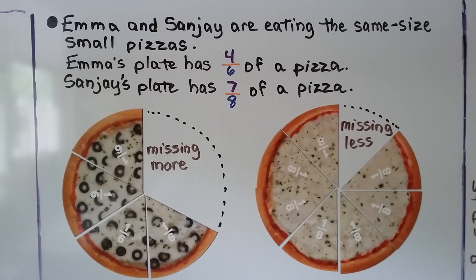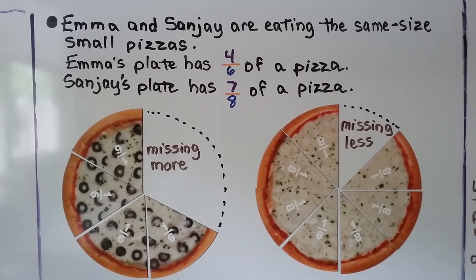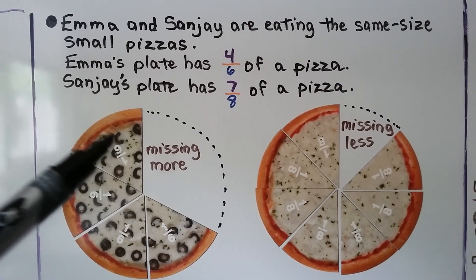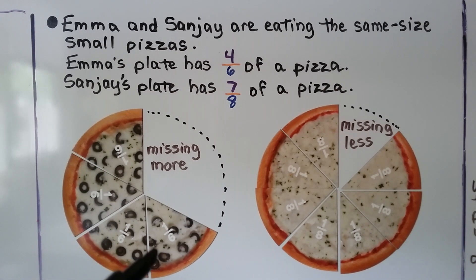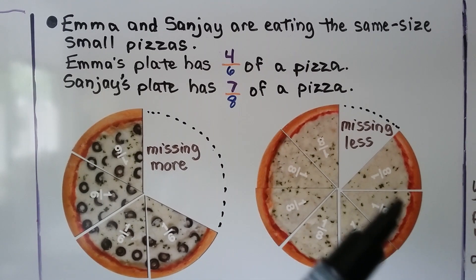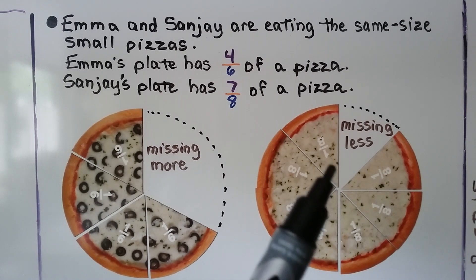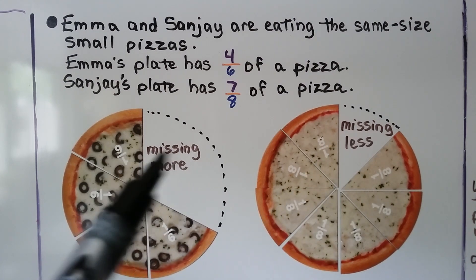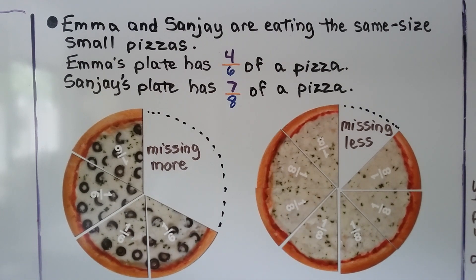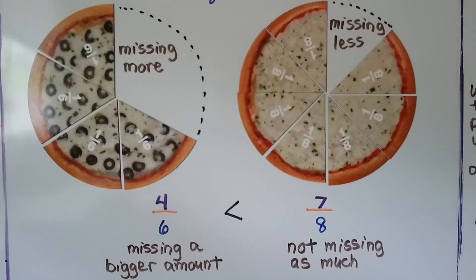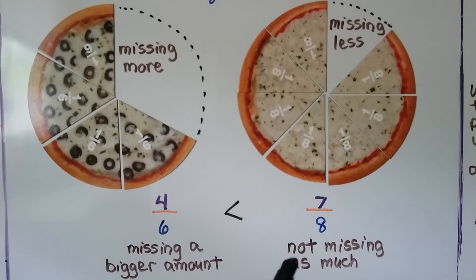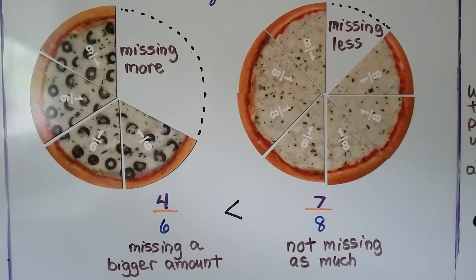Emma and Sanjay are eating the same size small pizzas. Emma's plate has four-sixths of a pizza. Sanjay's plate has seven-eighths of a pizza. We can compare four-sixths to seven-eighths using the Missing Pieces strategy. We count the one-sixth pieces and the one-eighth pieces. We can see that seven-eighths is missing less pizza, so that's going to be the greater fraction. Four-sixths is less than seven-eighths because four-sixths is missing a bigger amount. Seven-eighths is not missing as much, so four-sixths is less.